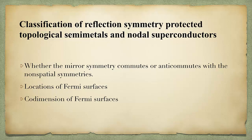So it is natural to consider the classification of reflectional symmetry protected topological semi-metals and nodal superconductors. The classification depends on three factors. First, whether the mirror symmetry operator commutes or anticommutes with non-spatial symmetry operators. Second, the location of the Fermi surfaces. Third, the codimension of the Fermi surfaces.